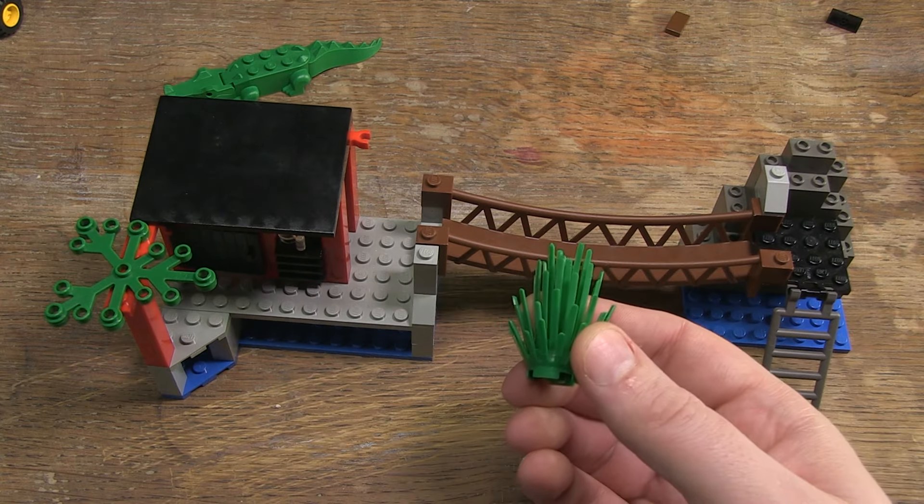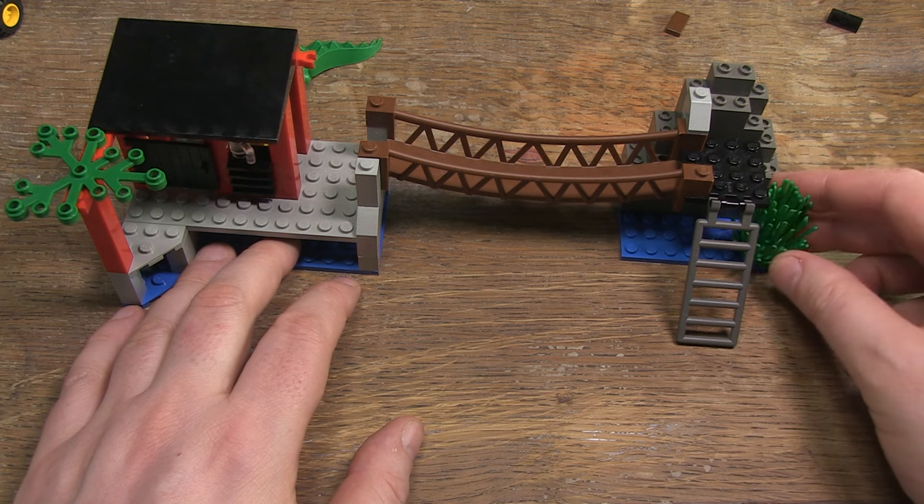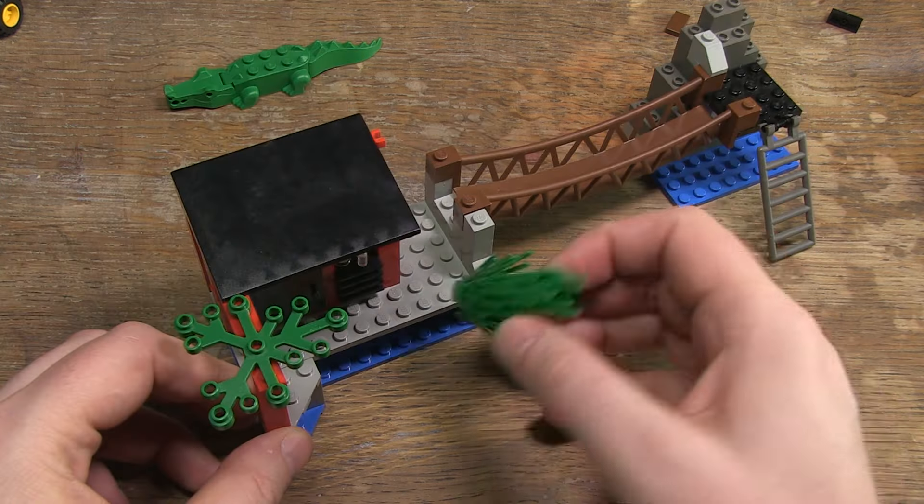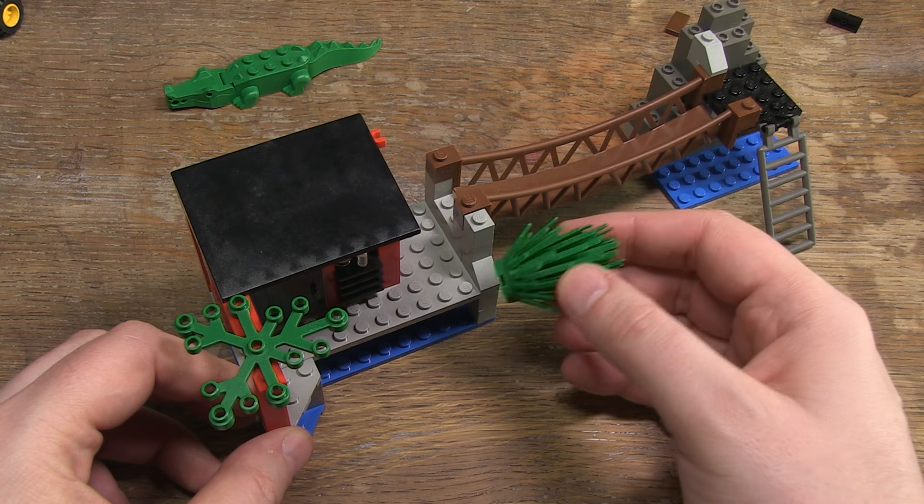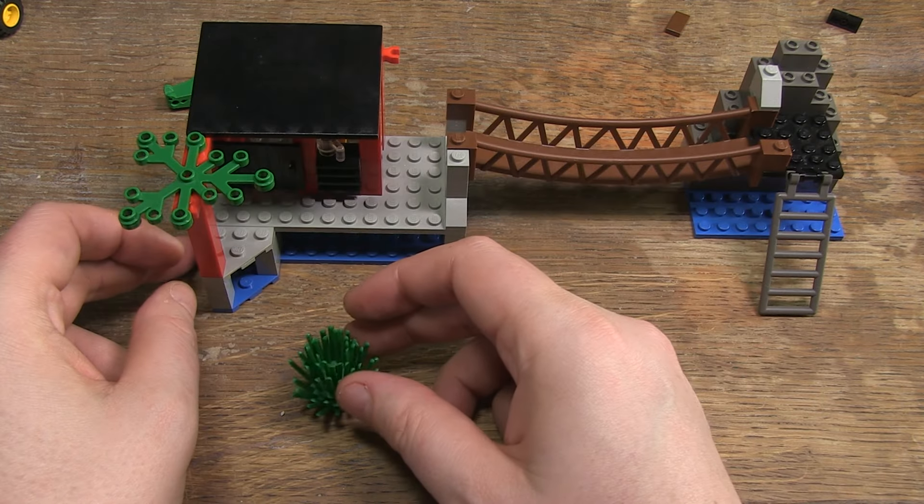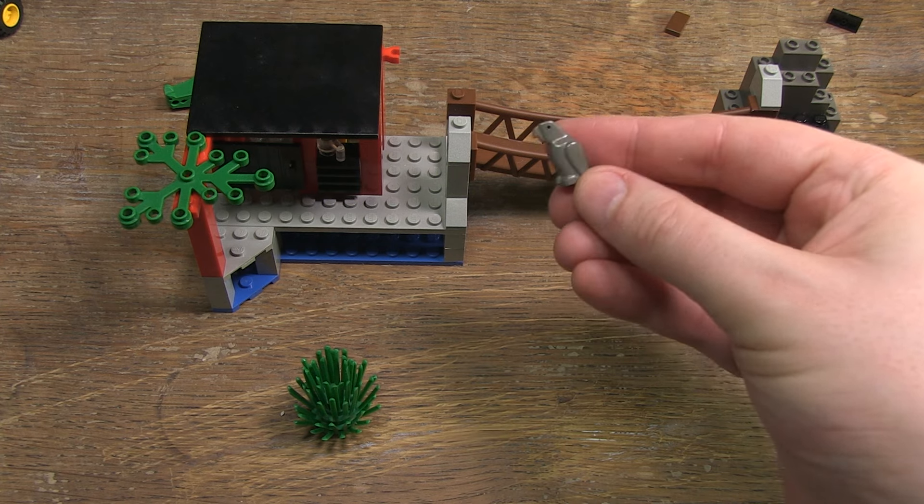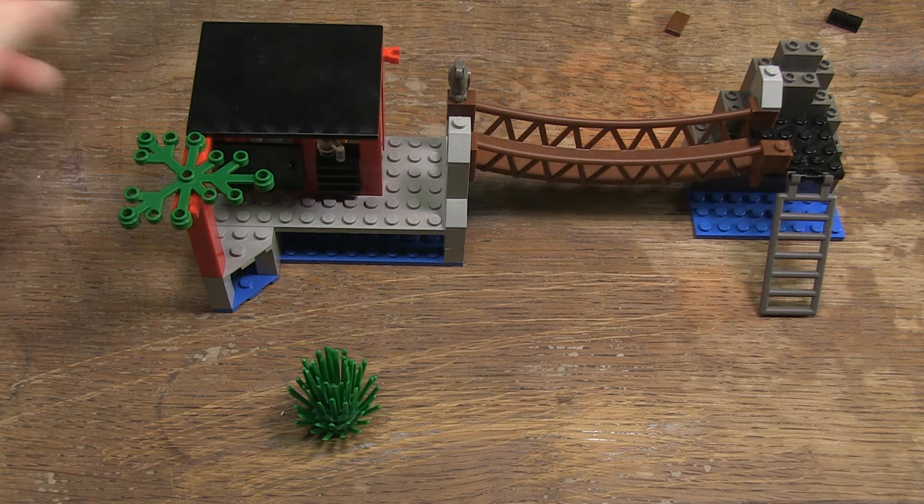Then you can connect the whole with a brown suspension bridge. There is also a prickly bush in the set. But since this represents water, you cannot place it here. So it's really just loose in the set as an extra. For me, this part was not necessary. And the production costs could perhaps have been used for something else.